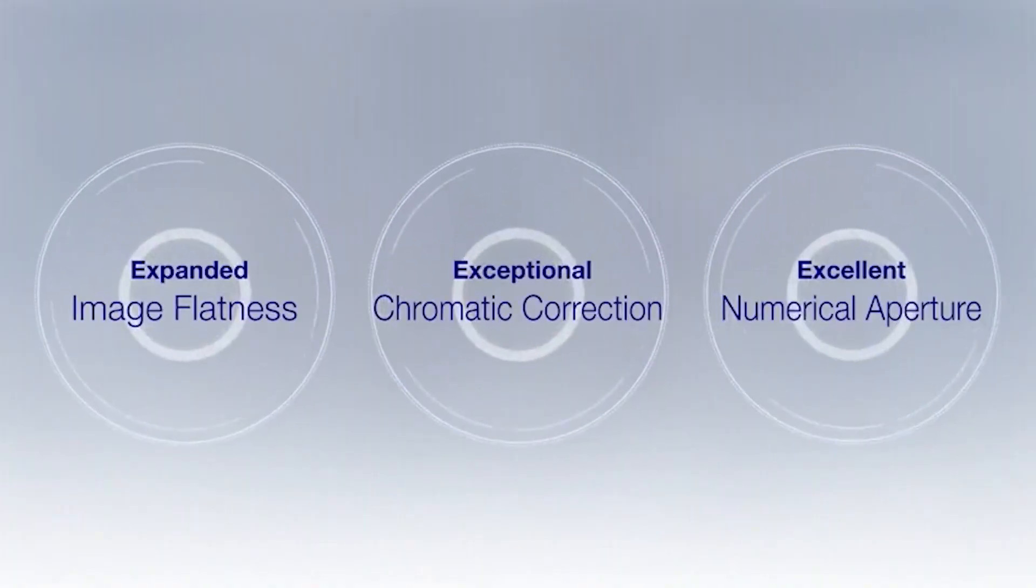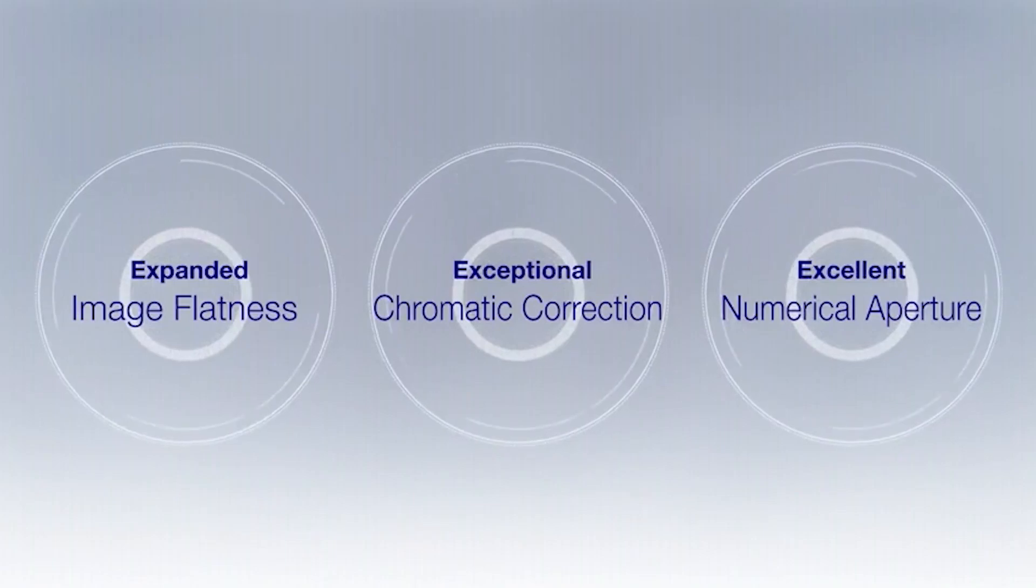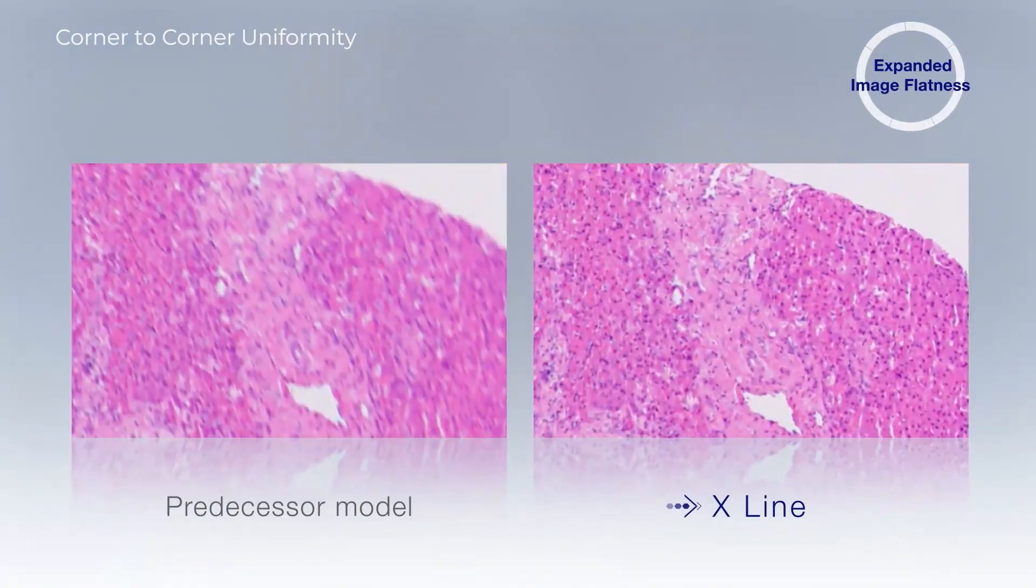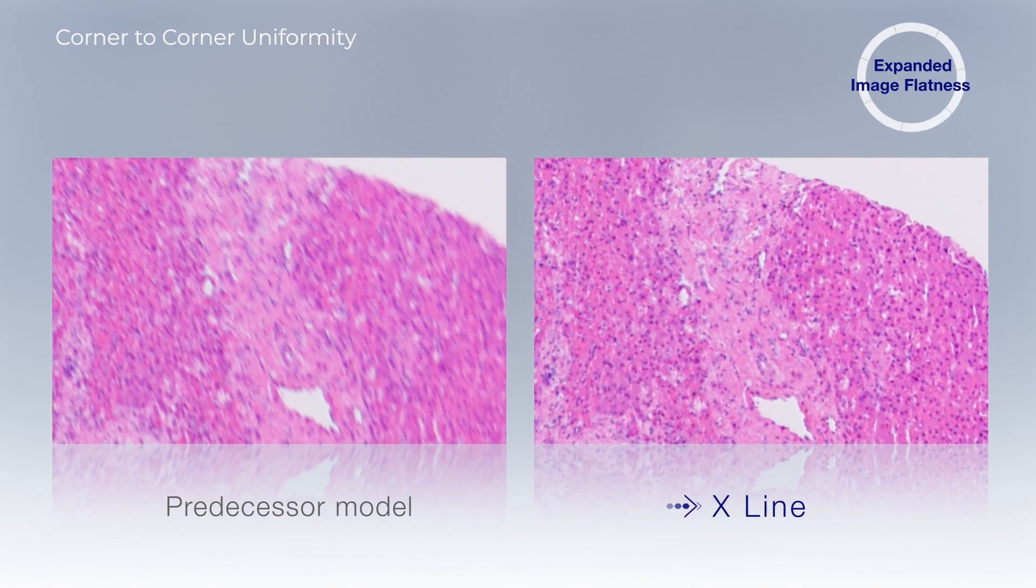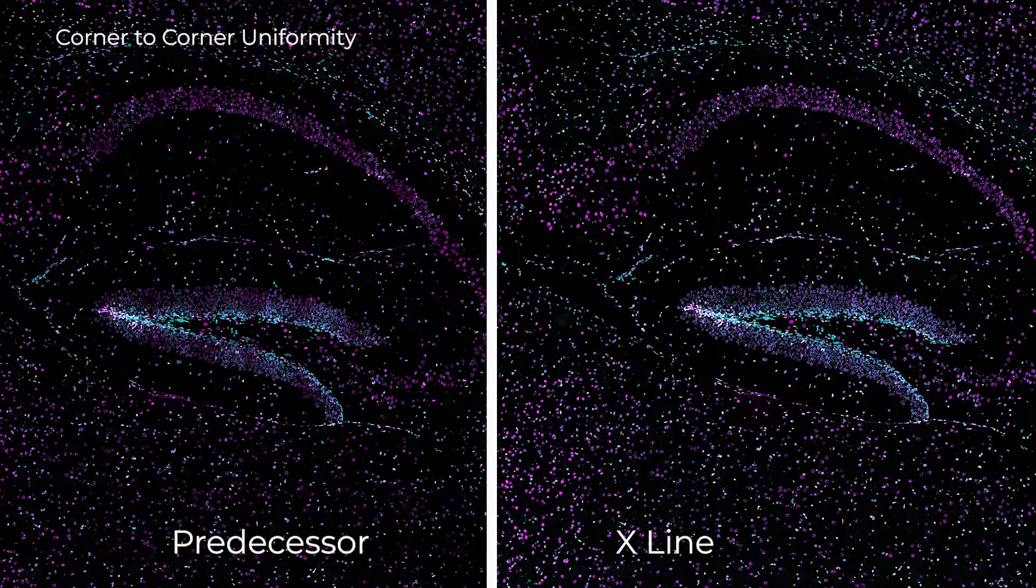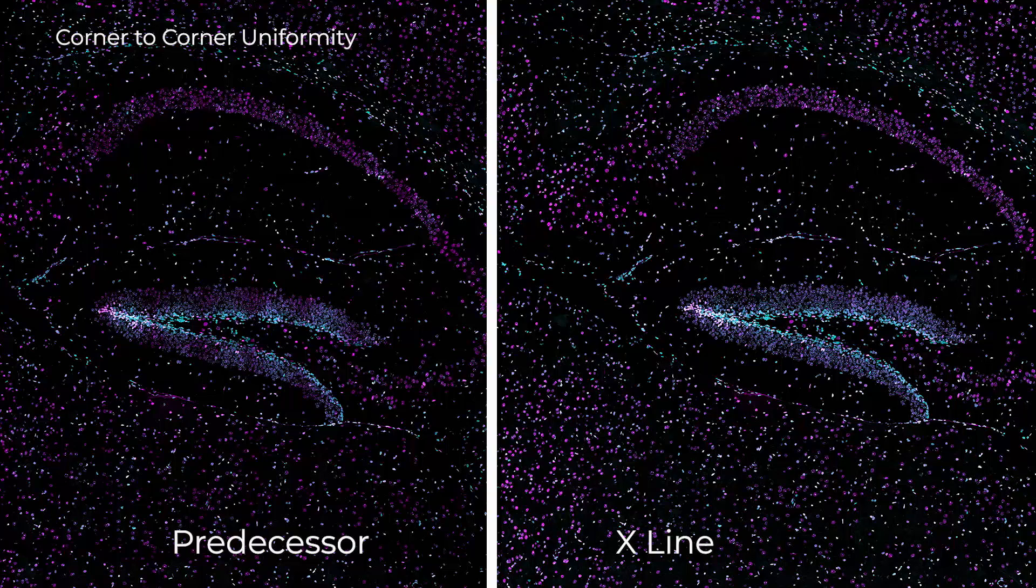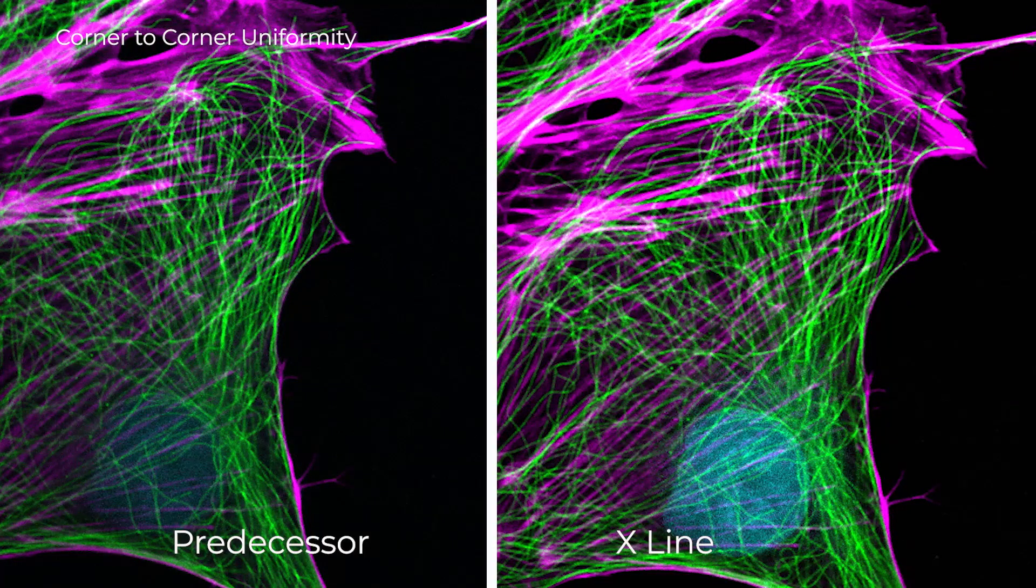This provides three main benefits to you as a microscopist. Image flatness is an important indicator of the reliability of quantitative analytical data over a large field of view. With X-Line objectives, you can now discover unparalleled flatness from the center to the periphery that doesn't sacrifice resolution or chromatic correction.